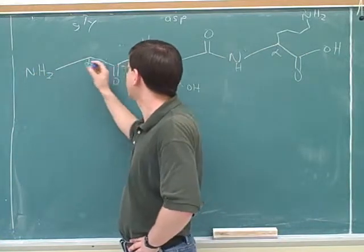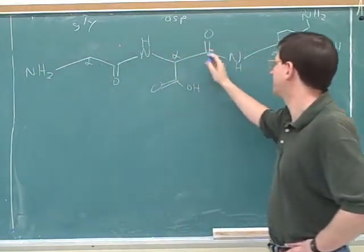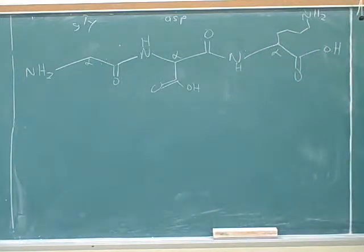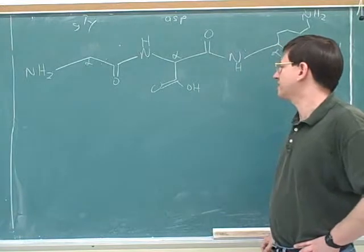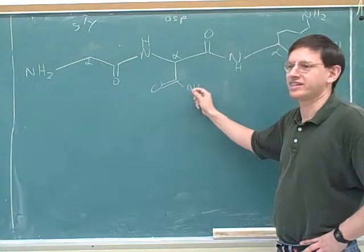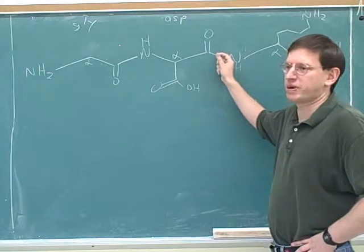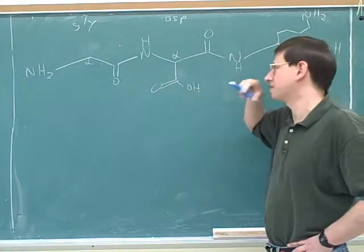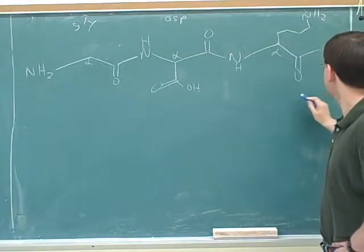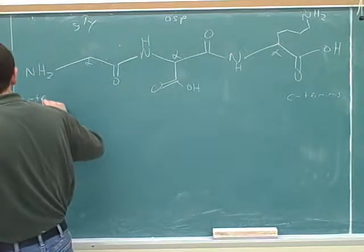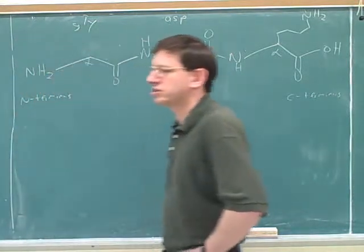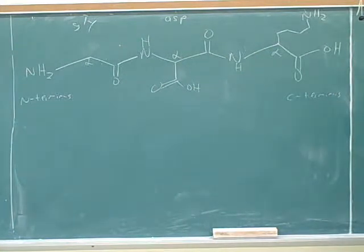The backbone is nitrogen, alpha carbon, carboxy carbon repeated for each amino acid. We know something is a side chain because it's a dead end; the backbone is the part with no dead end. This end is the C-terminus and this is the N-terminus. It's conventional to put the N-terminus on the left and the C-terminus on the right.